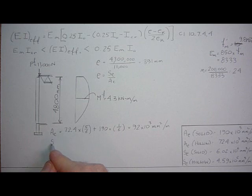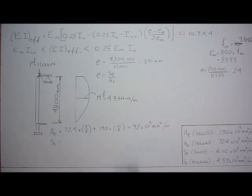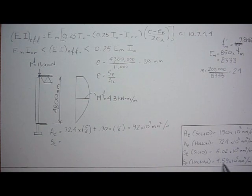And we do the same for section modulus. SE would be, for hollow, we got 4.59. 4.59 times five-sixths are hollow.